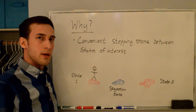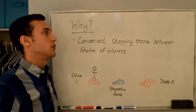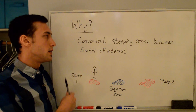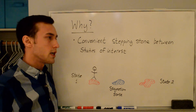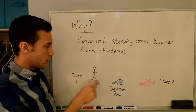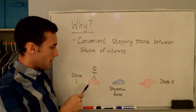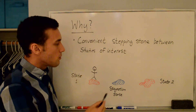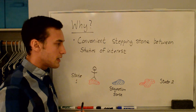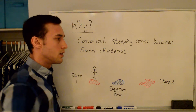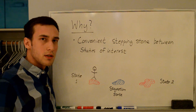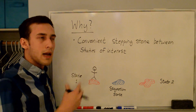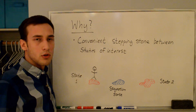You may be asking yourself why we even need to bother with stagnation states. One of the reasons is that it's a convenient stepping stone between two different states of interest. So if we're talking about state one and I'm trying to get to state two but I can't jump that far, one convenient way is to jump to this intermediate stagnation state and then get from that stagnation state to state two. If you want to see an example of this in action, I have a video analyzing the inlet or diffuser of a turbofan engine.